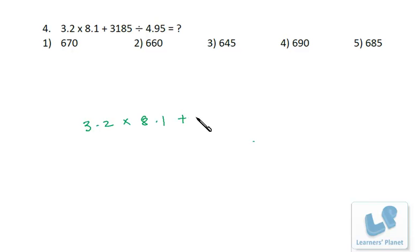3.2 into 8.1 plus 3185 by 4.95. In this calculation of 3.2 into 8.1, if I multiply, see there are two decimals. If I eliminate 0.2 and 0.1, a very nominal difference will be there, so that can be managed because options are having the difference minimum of 10. So I just can write: 3 eights are 24, and because of this 0.2 and 0.2, I just take it around as 25 because they would create a very nominal difference. So instead of 24, I'm just writing around 25.